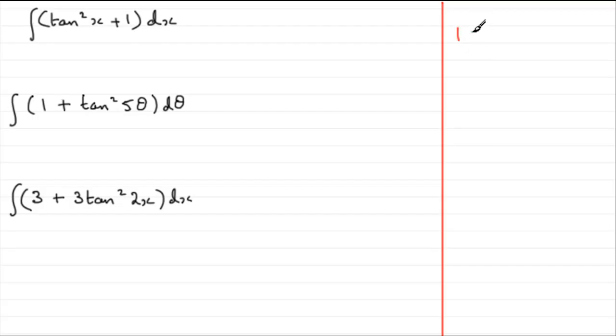It is 1 plus tan squared of any angle, let's say a, is identical to sec squared of that angle, in this case a.